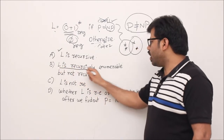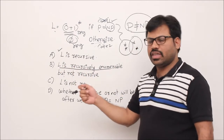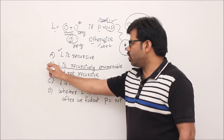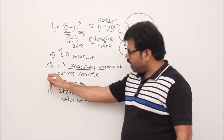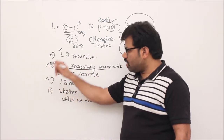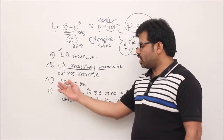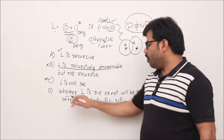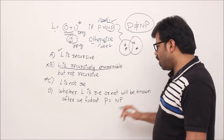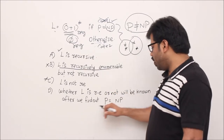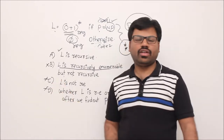Option B says L is recursively enumerable but not recursive — wrong, because it is recursive. Option C says L is not recursively enumerable — wrong, since regular implies RE. Option A is already correct. We don't need to determine whether L is RE based on P=NP; the language is regular regardless.